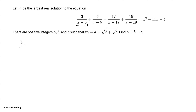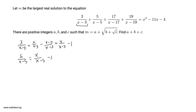In particular, 3/(x-3) = x/(x-3) - (x-3)/(x-3) = x/(x-3) - 1. Similarly, 5/(x-5) = x/(x-5) - 1, and 17/(x-17) = x/(x-17) - 1. For the exact same reason, 19/(x-19) = x/(x-19) - 1.